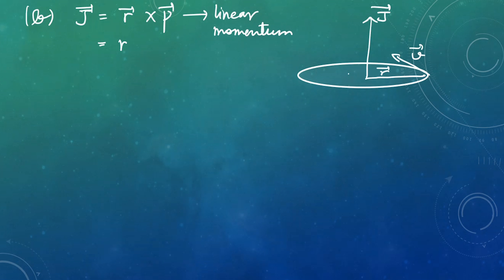This can be written as R cross M V, which is M times R cross V. These R and V both lie in the same plane. J is R cross V, that means J will be perpendicular to the plane containing R and V.